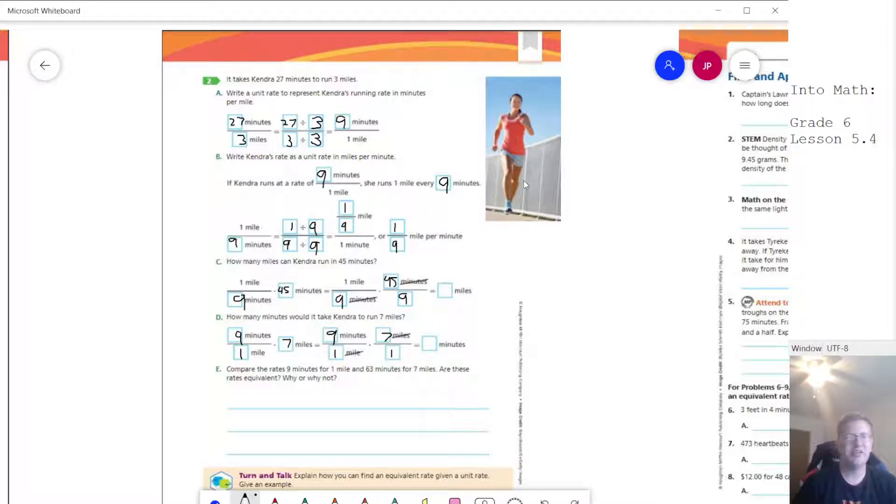All right, so now we have a filled in page. We're doing 27 minutes divided by three miles to get a rate of nine minutes per mile. So she will run one mile every nine minutes. And then if we want to find out how much of a mile she runs in each minute, we can divide the one mile divided by nine minutes. That gives us one ninth of a mile per minute.